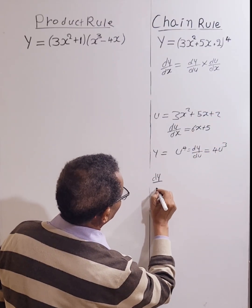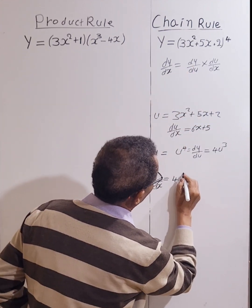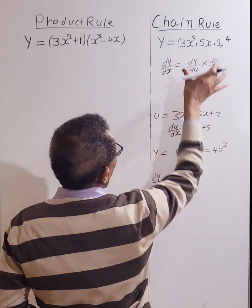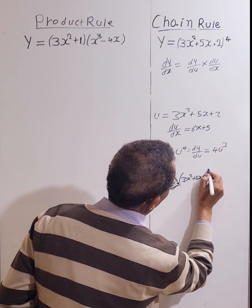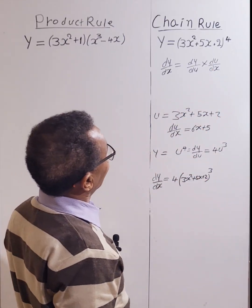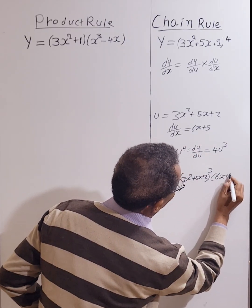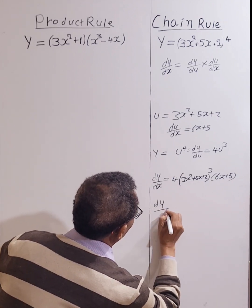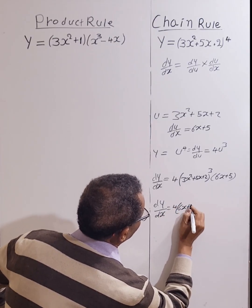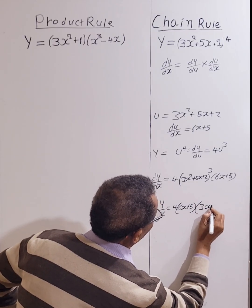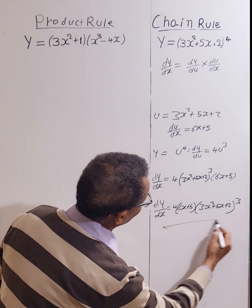Now let's apply this. dy/dx equals dy/du, which is 4, with u substituted as the inner function — so (3x² + 5x + 2)³ — times du/dx, which is the derivative of the inner function, times (6x + 5). So dy/dx equals 4(6x + 5)(3x² + 5x + 2)³.